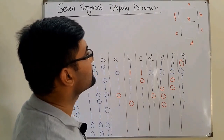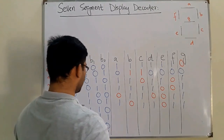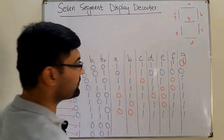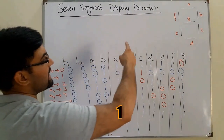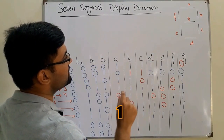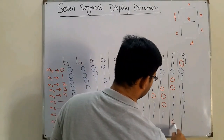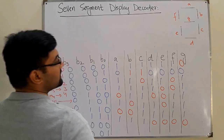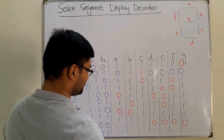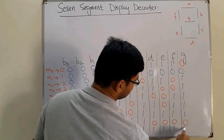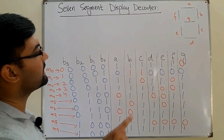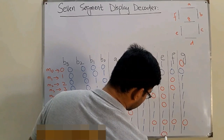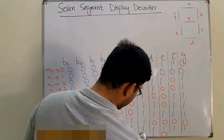For six, a and b are off and the rest are on. For seven, f, g, e, and d are off and the rest are on. For eight, all segments are on. For nine, only e is off and the rest are on.